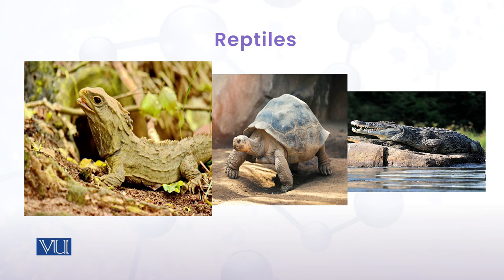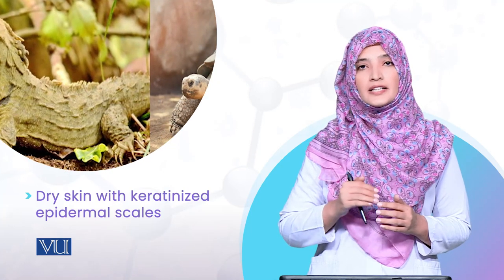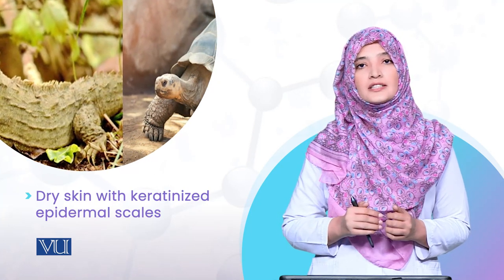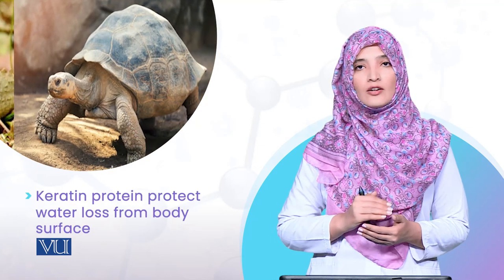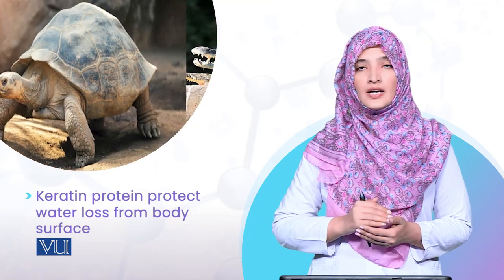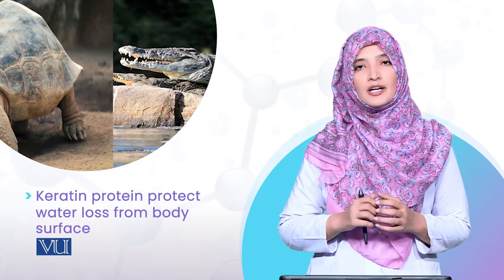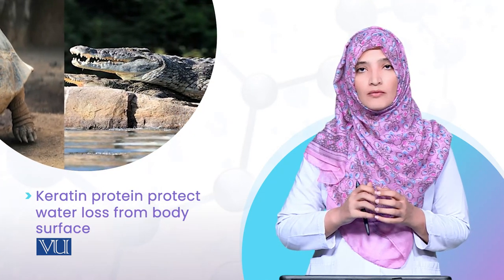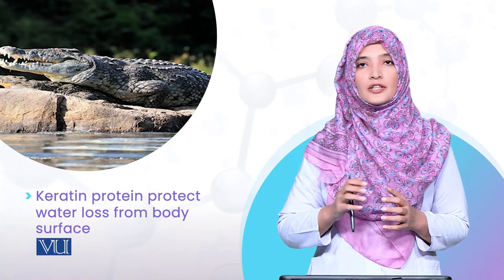سب سے پہلے ان کی body میں جو change آئی وہ ہے dry skin۔ Dry skin keratin کی بنی ہوتی ہے — ان کی epidermal layer keratin کی بنی ہوتی ہے، جس کی وجہ سے water loss across their body کو prevent کر سکتے ہیں۔ یعنی dry environment میں یہ اپنی body کے water کو conserve رکھ سکتے ہیں for a long period of time۔